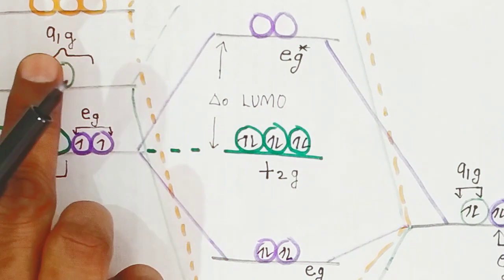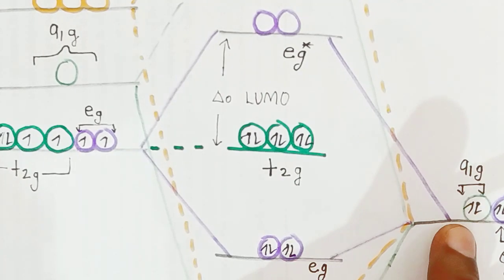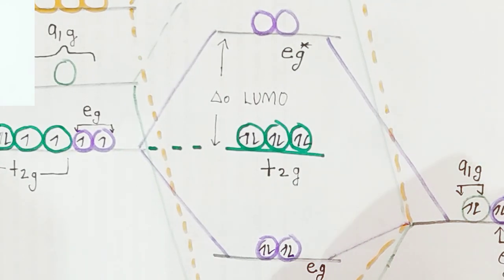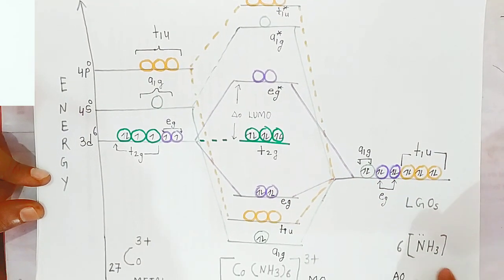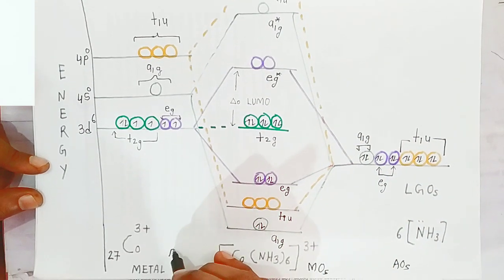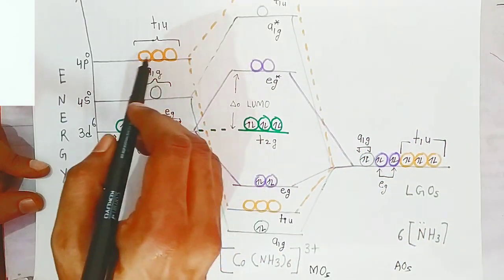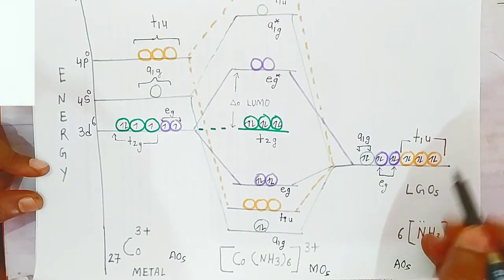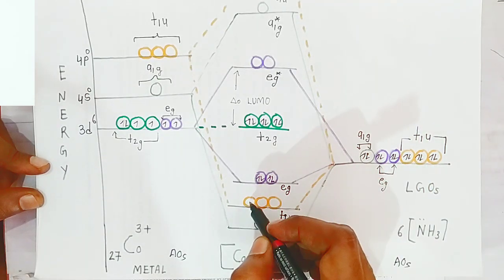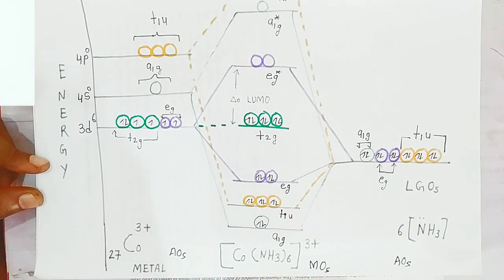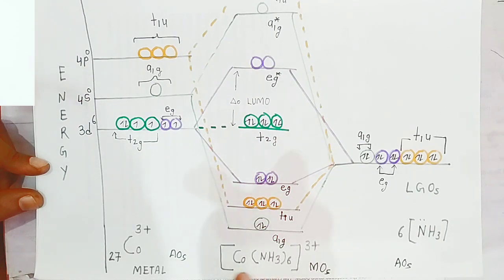Next, the vacant a₁g orbital of the metal combines with the paired a₁g ligand group orbitals, and those two electrons go into the a₁g bonding molecular orbitals. Then the three t₁u metal orbitals combine with three t₁u ligand group orbitals, and all three pairs go into the t₁u bonding molecular orbitals. This completes the electronic distribution in the molecular orbitals of [Co(NH₃)₆]³⁺.